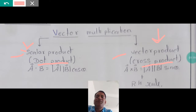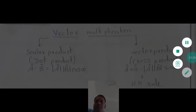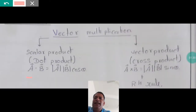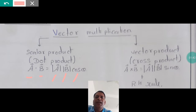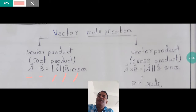Today we will be talking about only the scalar product. The basic operation for a scalar product is vector A dot vector B, which equals the magnitude of vector A multiplied by the magnitude of vector B multiplied by cos theta. Theta is the angle between vector A and vector B.